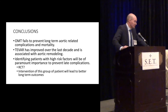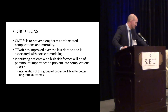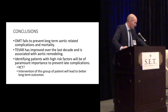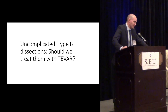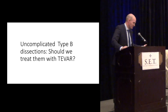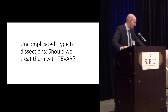The question is: should we do a randomized controlled trial? There is some effort right now to get a trial going — it's going to be a very expensive trial, and there has been a lot of government funding looked at to get this going. I think intervention in this particular group of patients will probably lead to better long-term outcomes. The question of whether we treat them with TEVAR at this point — I don't know — but we need to find the patients that will benefit the most and offer them an opportunity to treat the natural history and prevent complications associated with Type B dissection. Thank you very much.